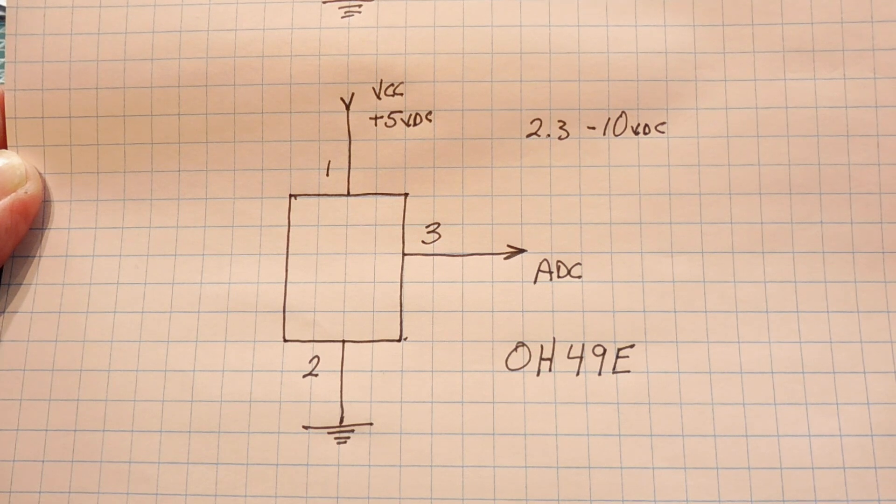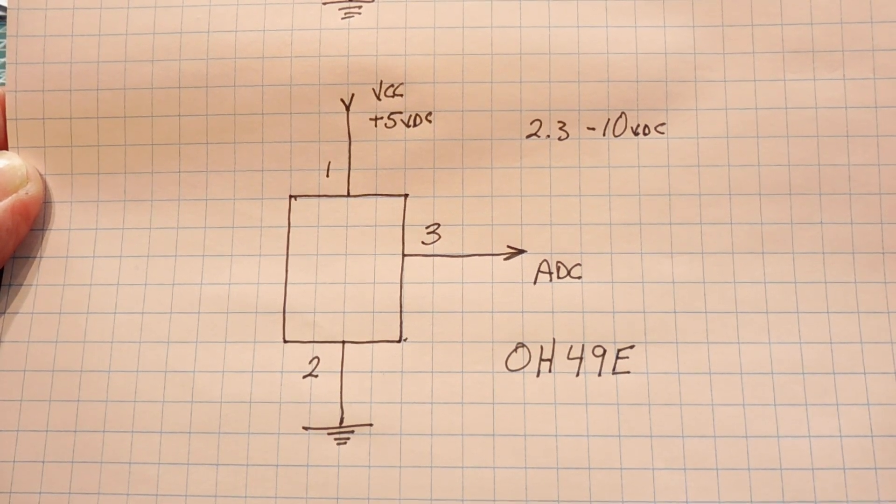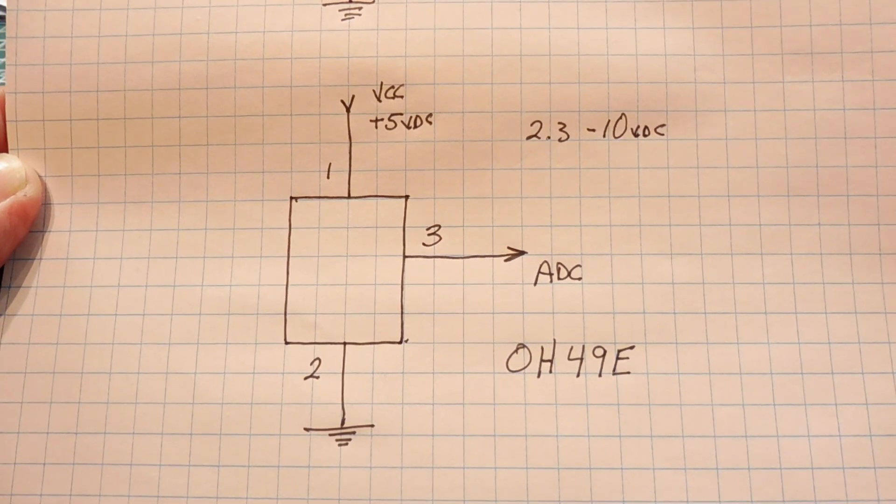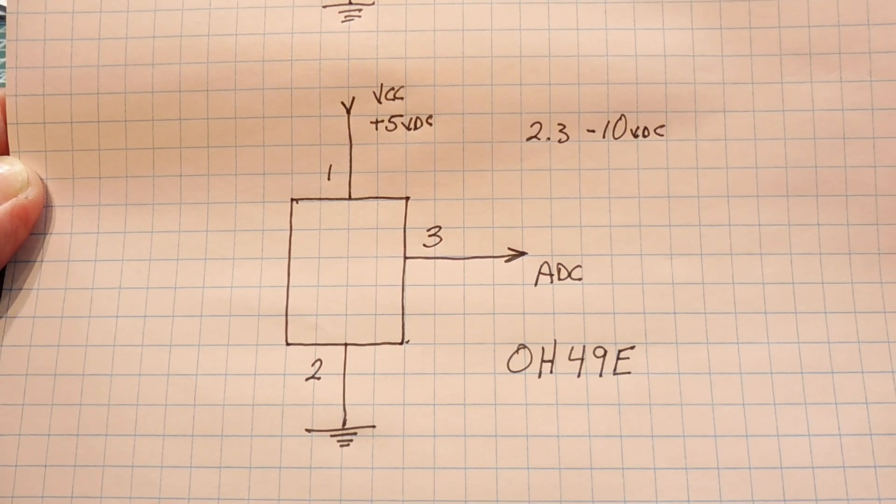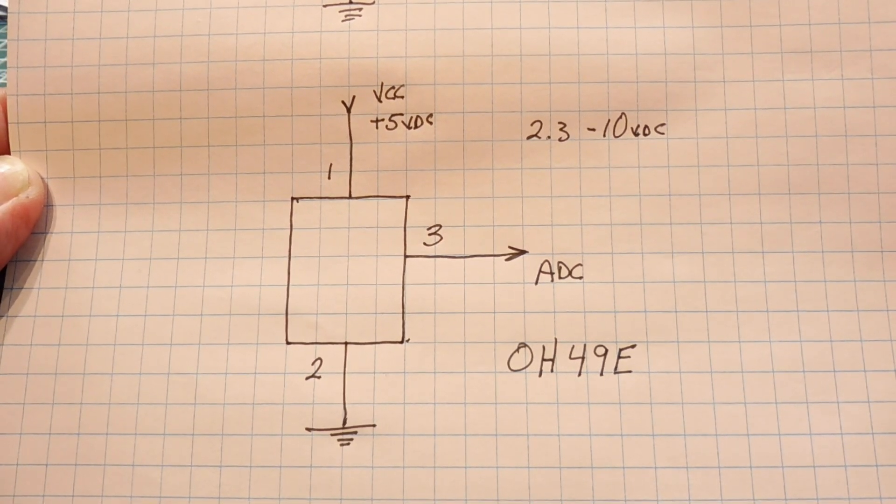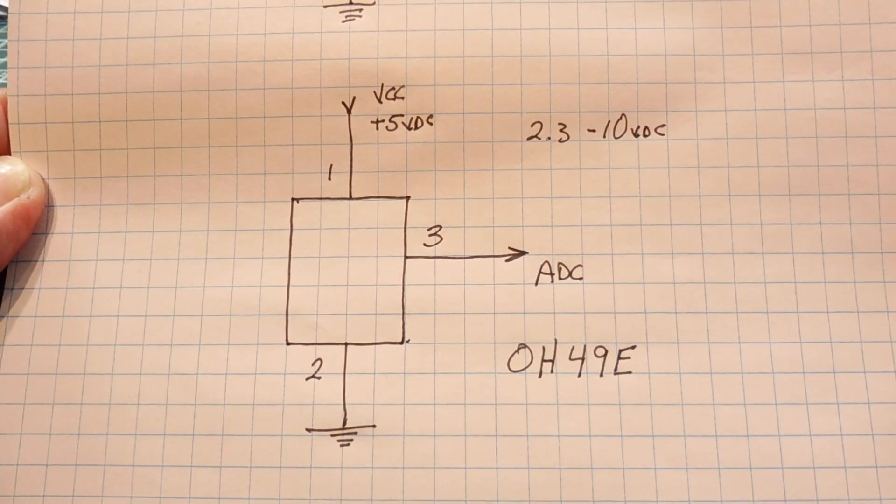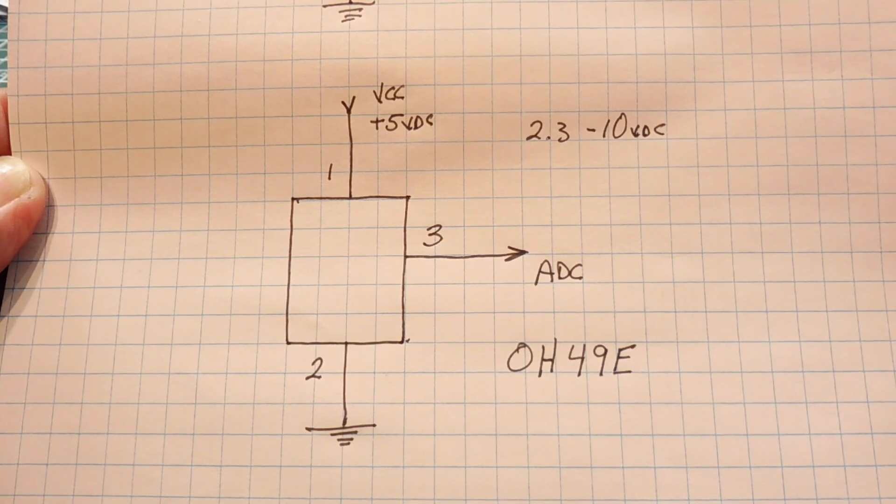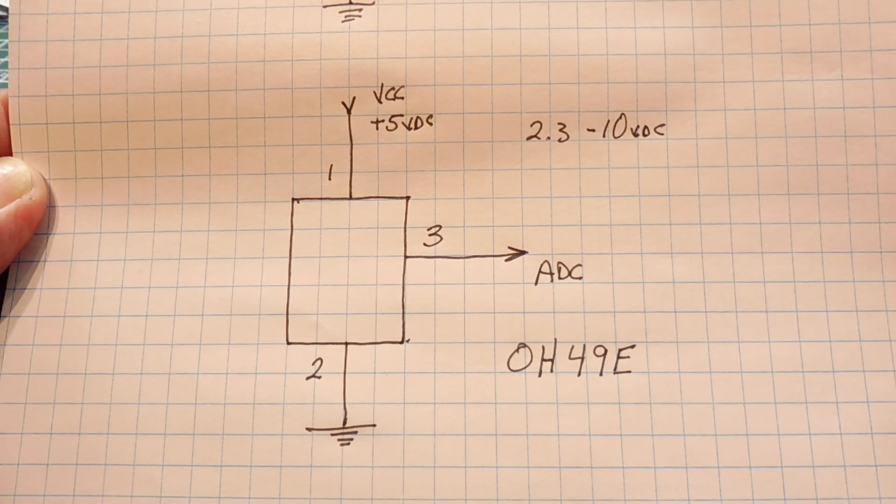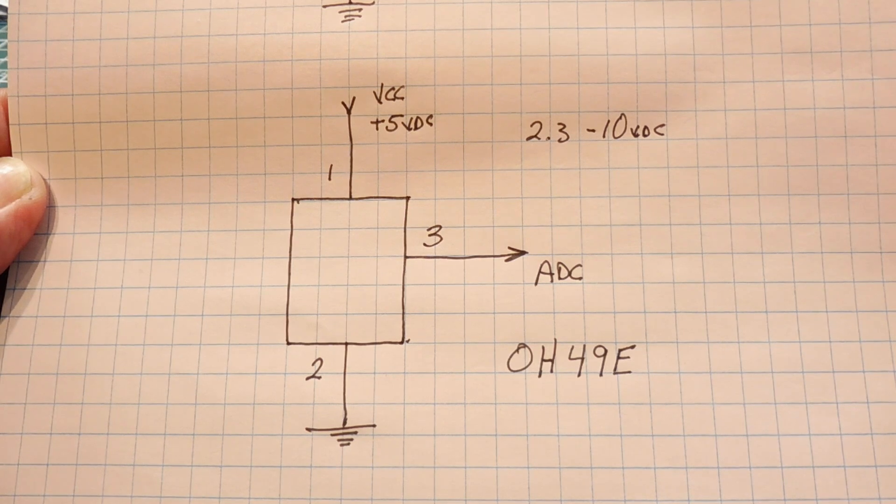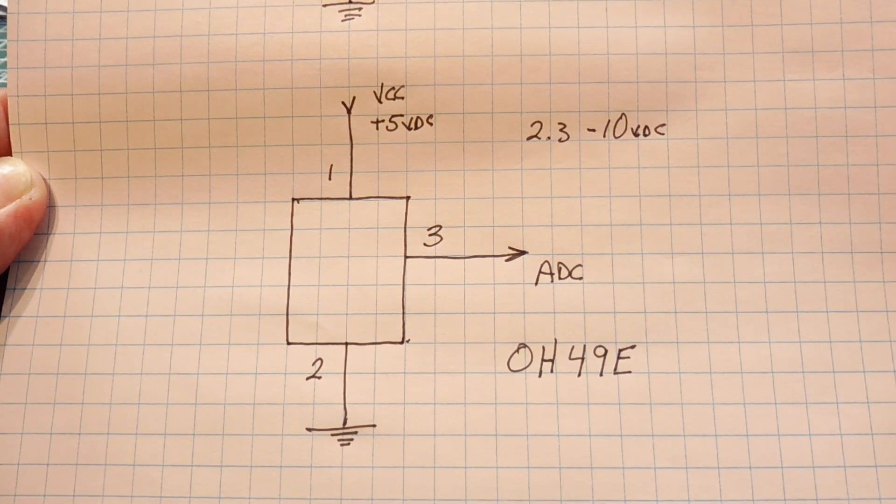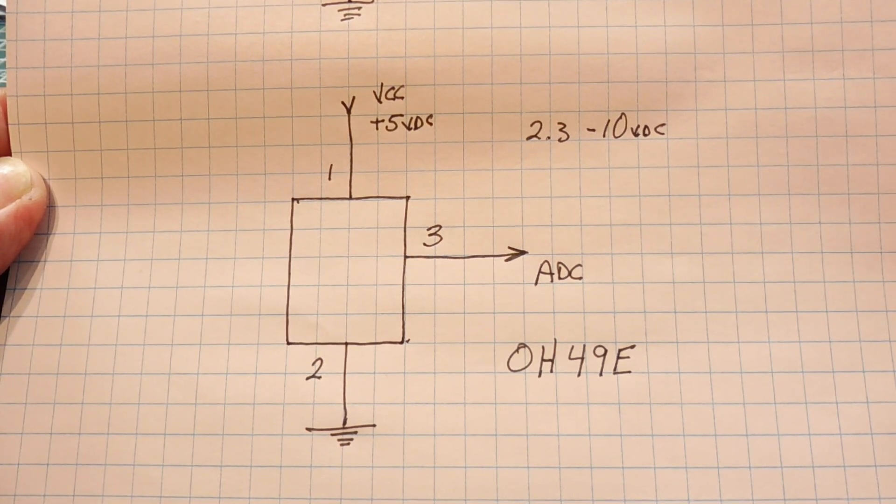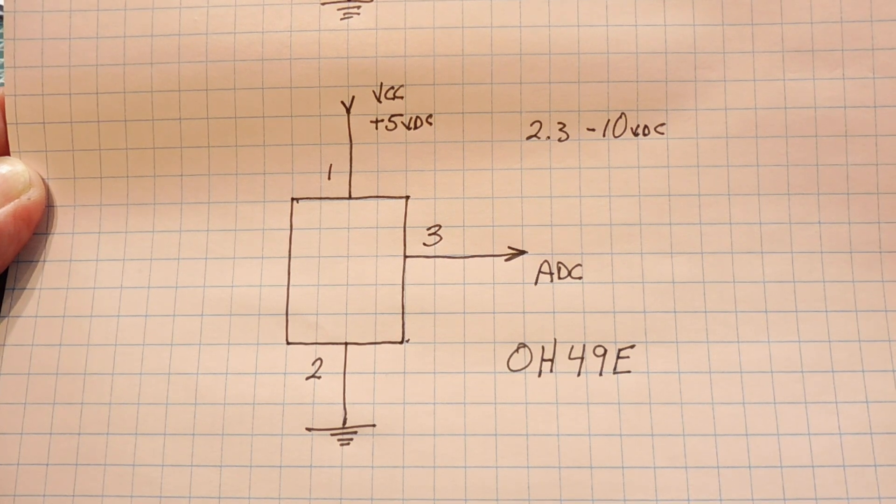Here's the second schematic for the linear Hall effect switch. It's pretty simple. You can see the three leads there, one, two, and three. One is VCC, two is ground. And three is the output voltage of 2 millivolts per gauss that's fed into the ADC of the Arduino Nano. Now the voltage range of this Hall effect switch is 2.3 volts to 10 volts DC, but I'm using the 5 volts from the nano.